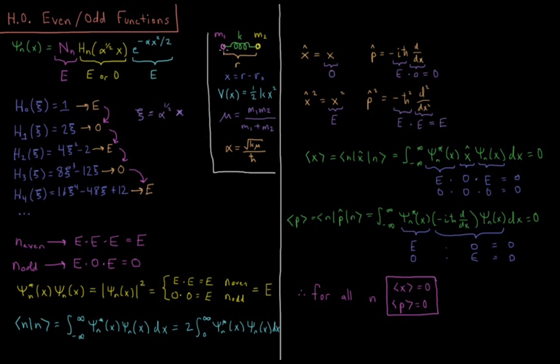The harmonic oscillator is a model for the vibrations of atoms. Two atoms here connected by a covalent bond. The strength of that bond is specified by a spring constant k, which gives us the potential energy V of x equals one-half kx squared. x is equal to displacement away from the equilibrium bond length r-naught, where the bond length is r.